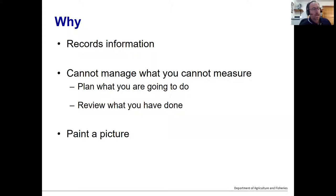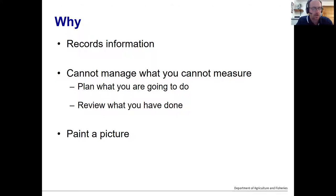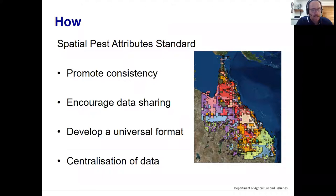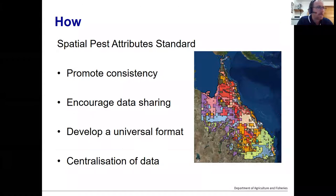There's an adage that you can't manage what you can't measure, and mapping gives you that ability to put parameters around measuring what you're trying to achieve. A map can paint a picture which is relatable — people can look at a map and understand something is happening in the landscape, identify with it, and see what it means. However, animals are transient, they can be seasonal, they do not respect borders or land tenures, and some species we pursue can be very cryptic in nature, making them very difficult to map.